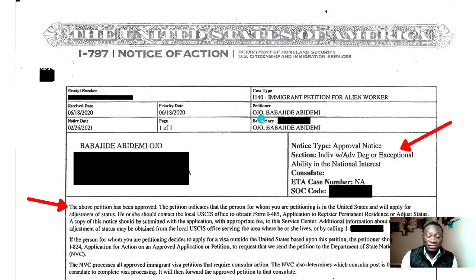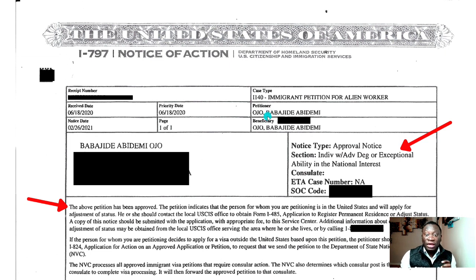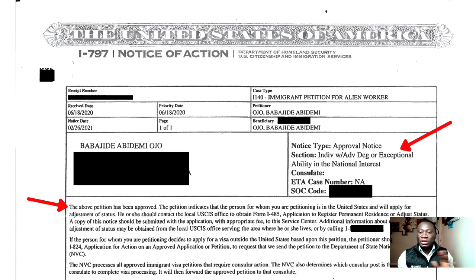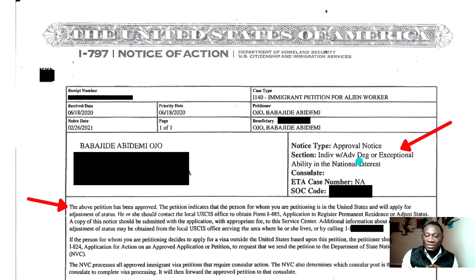It could be different if someone is filing for another person — for example, if your parent is filing an immigrant petition for you. But because I'm sponsoring myself, I'm both the petitioner and the beneficiary. This column will have your name and address, and here is where you would get the good news. This notice type is called an Approval Notice, and this section of the approval reads: 'Individual with Advanced Degree or Exceptional Ability in the National Interest.'